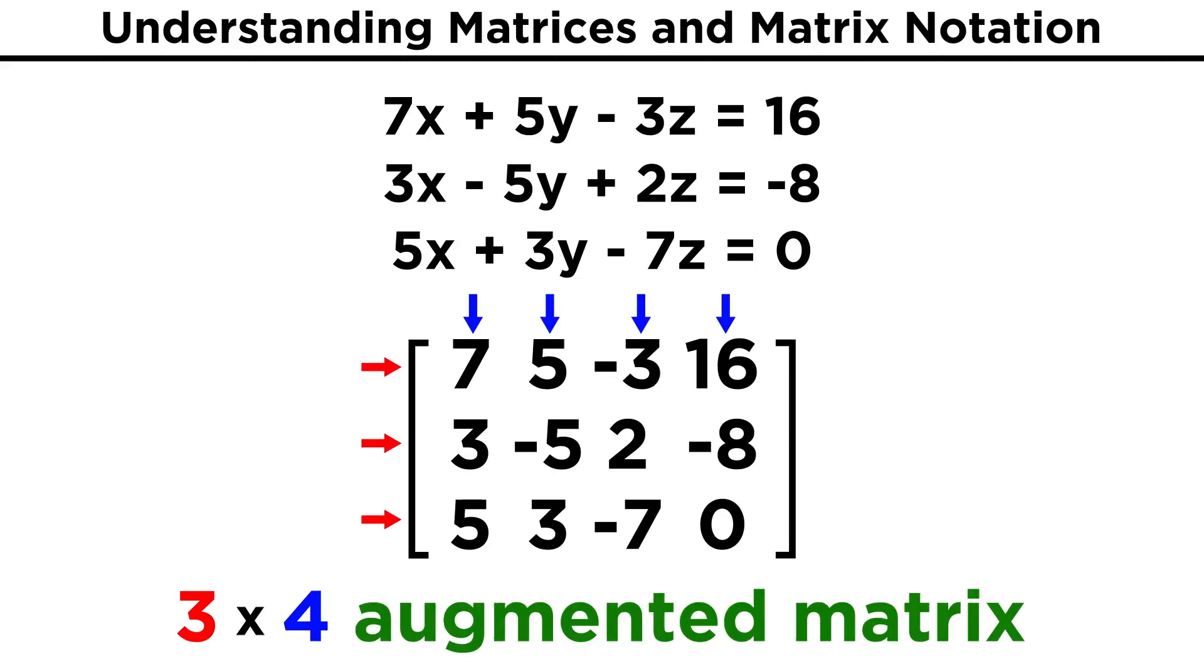So there we have it, a three by four matrix, meaning a matrix with three rows and four columns, that contains all of the information that was contained in the system of linear equations. We don't need to see the variables, because they are implied.